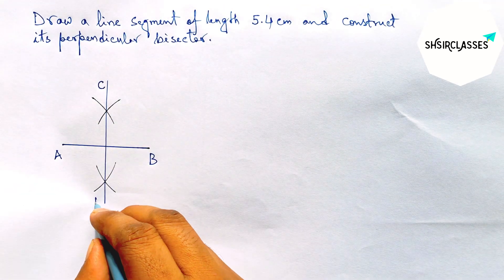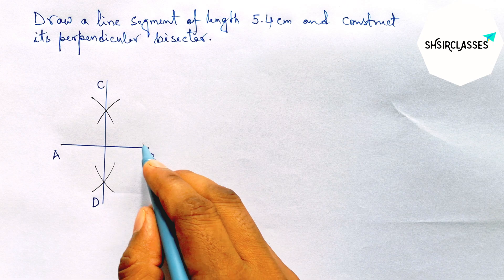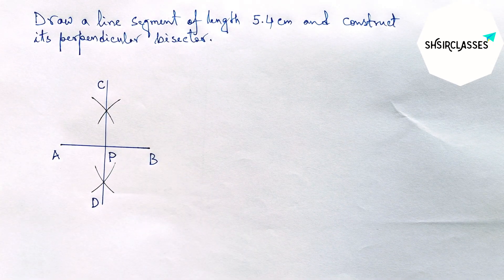So now labeling here point C and here D. AB and CD meet at a point, so taking here point P.